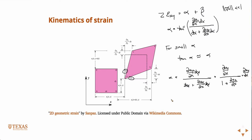Like that. And you can work the same logic with beta. And what you would find out is that beta is partial u_x partial y. And then so since we have 2 epsilon xy is equal to alpha plus beta, which is equal to that guy.